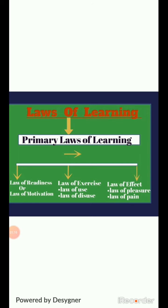Please also learn the sequence of primary laws. The first law is the law of readiness, also called the law of motivation. The second law is the law of exercise, which bifurcates into the law of use and the law of disuse. The third law is the law of effect.